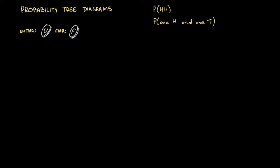These are slightly different questions for a significant reason. There's only one way of getting two heads if you flip a coin twice — on the first flip you get a head and on the second flip you get a head. Whereas if we're asked to find the probability of getting one head and one tail, there are two different ways: a head on the first flip and a tail on the second, or a tail on the first and a head on the second.